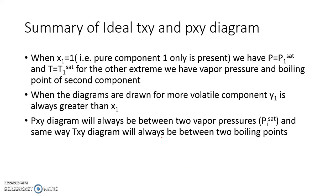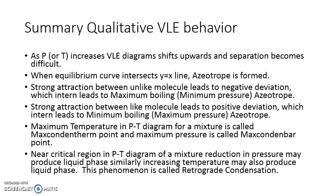To summarize: for an ideal PX1 diagram, when X1 is 1 you get P equal to P1_sat, and for the other extreme P equals P2_sat. Similarly for temperature, T1_sat and T2_sat. For the more volatile component, Y1 will always be greater than X1. The PX1 diagram for an ideal binary system always lies between P1_sat and P2_sat, and the TX1 diagram always lies between T1_sat and T2_sat.